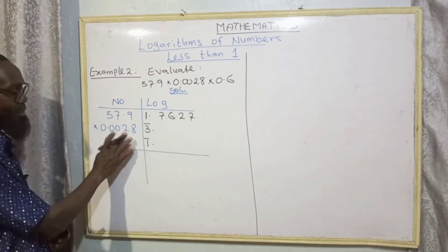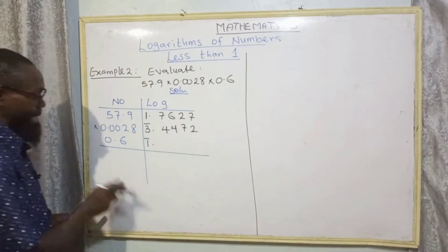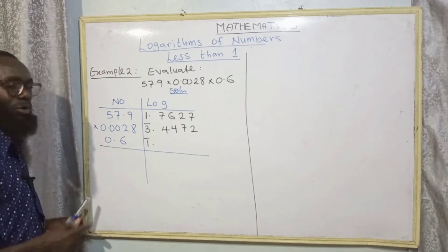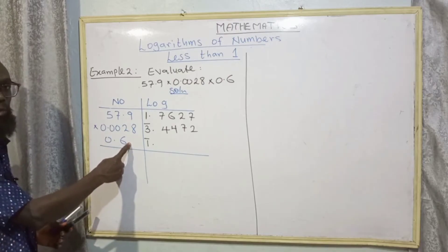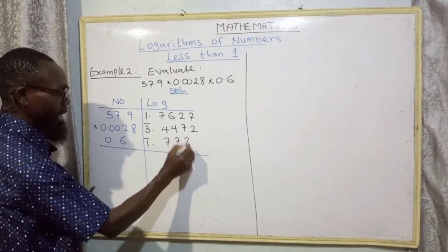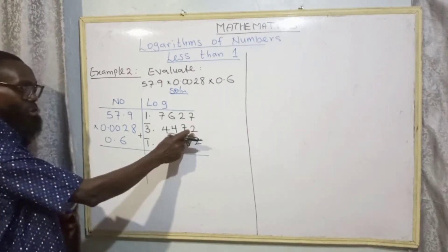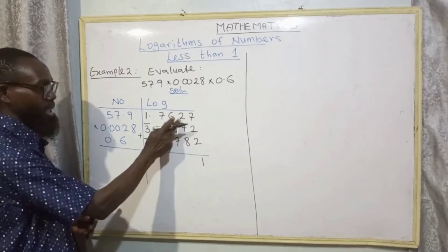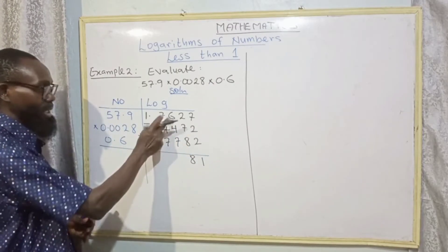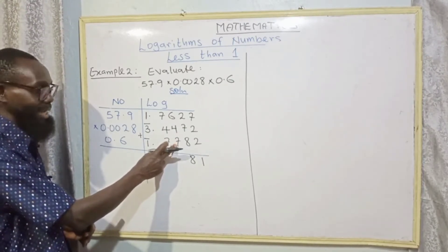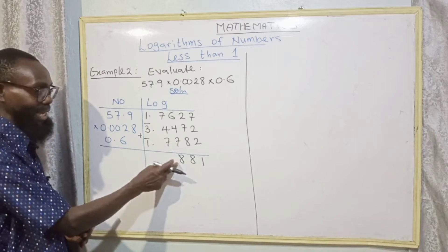We check the logarithm table: 57 under 9 gives 7627. For 28 under 0 we have 4472. For 60 under 0 (since there is no single digit 6 in the table, we use 60) we have 7782. This multiplication changes to addition: 7 plus 2 plus 2 gives 11, one carry one; 2 plus 7 plus 7 plus 1 carried is 17, seven carry one; and so on through the digits.